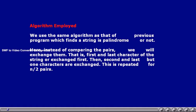The first character and last character will be exchanged, the second character and last but one character will be exchanged, and vice versa. This is carried out for n/2 pairs, and thus the string gets reversed and then printed.